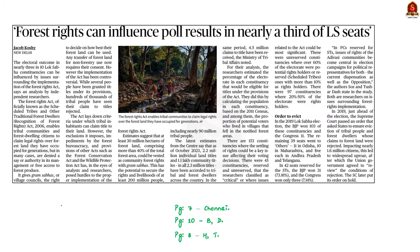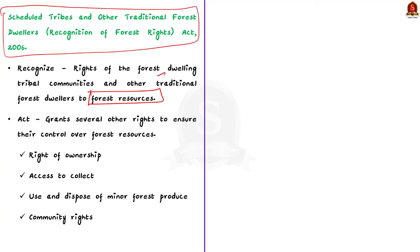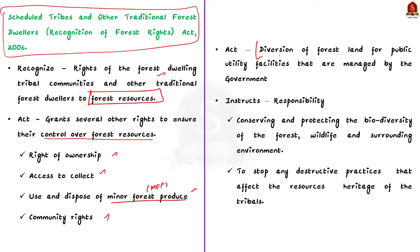This news article talks about the potential electoral impact of issues related to the implementation of the Forest Rights Act 2006, technically called the Scheduled Tribes and Other Traditional Forest Dwellers Recognition of Forest Rights Act 2006. This act recognizes the rights of forest-dwelling tribal communities and other traditional forest dwellers to forest resources, as these communities depend on forests for livelihood, habitation, and socio-cultural needs. The act grants rights to ownership, access to collect, use and dispose of minor forest produce, and community rights. It also provides rights for the diversion of forest land for public utility facilities like schools and fair price shops managed by the government.